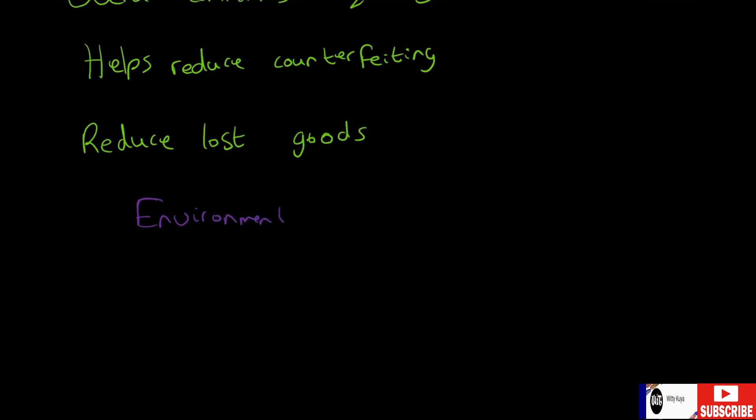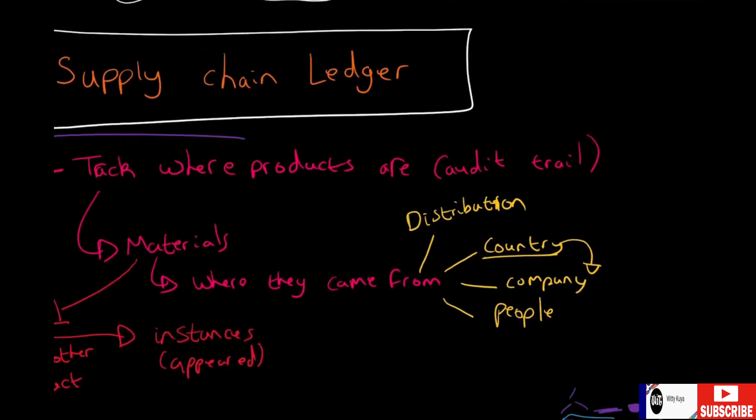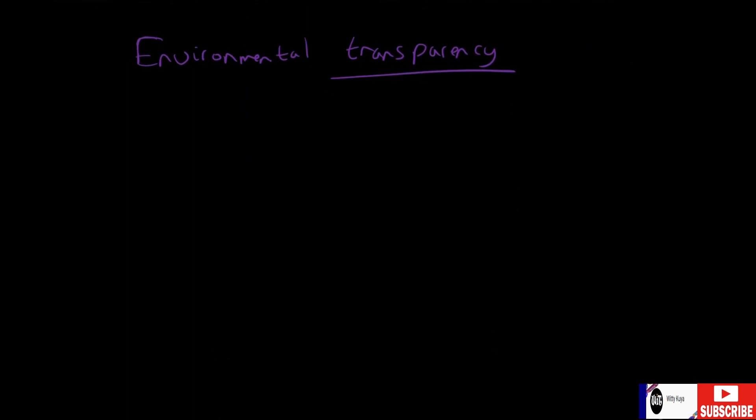That's the same with materials, whether you're a customer buying the phone, in production, mining, distribution, or the consumer side—you can reduce lost goods. Overall, it also has environmental transparency. You can see what country was involved, what materials, whether it came from an endangered rainforest or is the skin of an endangered species. That might change how you perceive the item or whether you'll buy it.